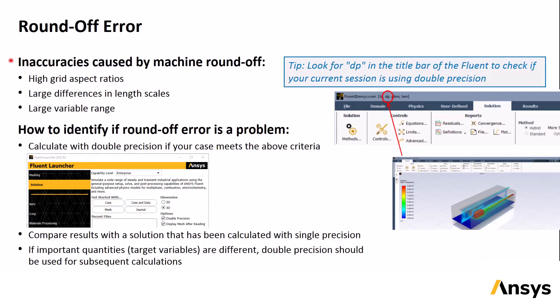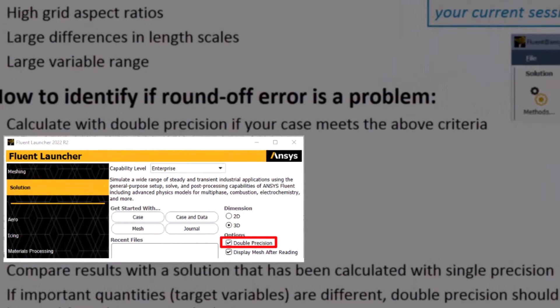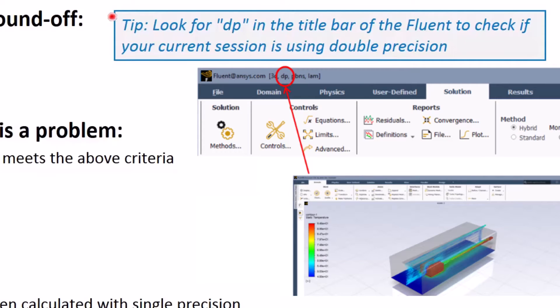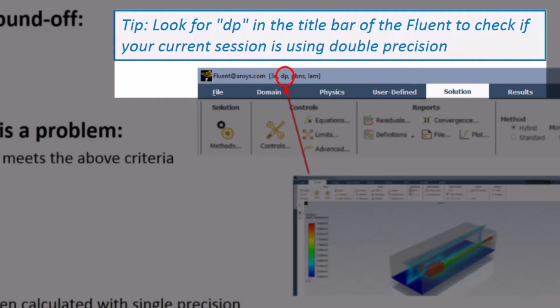Round-off errors are any inaccuracies caused by machine round-off. These can occur in some situations when there are very high aspect ratio cells, or large differences in length scales, or large ranges in values of variables. The procedure for checking the importance of round-off errors is to check for the criteria just mentioned, and calculate the solution in double precision. Double precision is selected when you start Fluent, as you see in the launcher panel here, or if you have Fluent open and you're not sure whether you're using single or double precision, look for the DP in the title bar of the Fluent window.